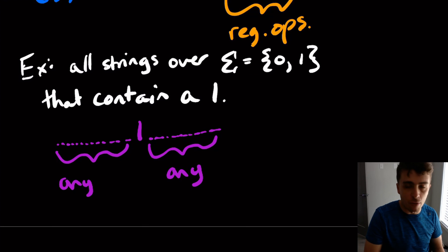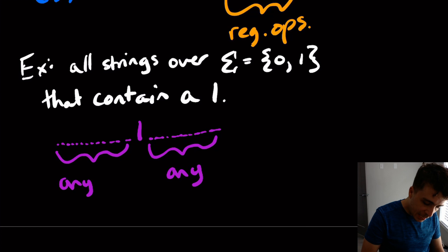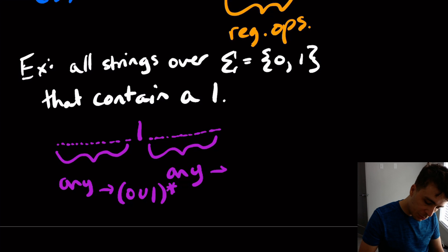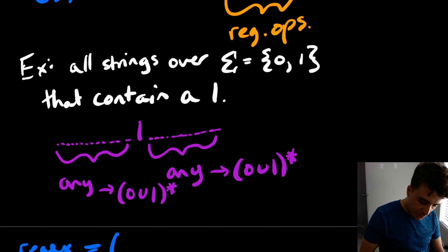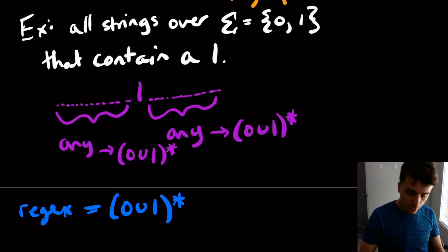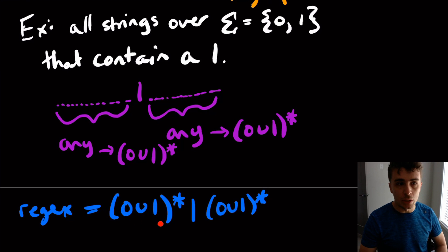Or if you have any other alphabet, you union all the characters in the alphabet and then apply star. So these 'anything' parts are going to be (0 union 1) star. So the final regex is (0 union 1)* 1 (0 union 1)* — representing all of the stuff at the beginning, followed by the 1, and then followed by anything after that.